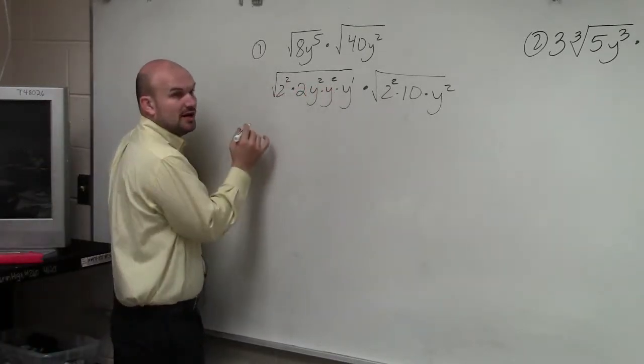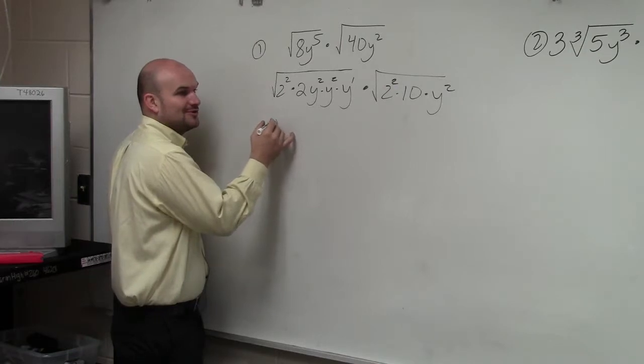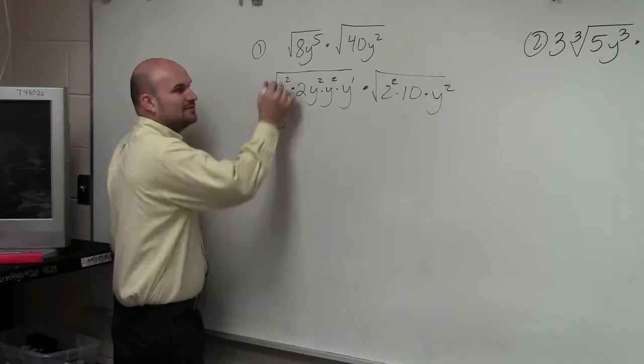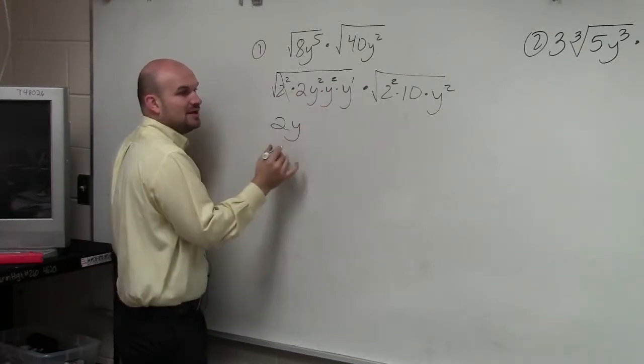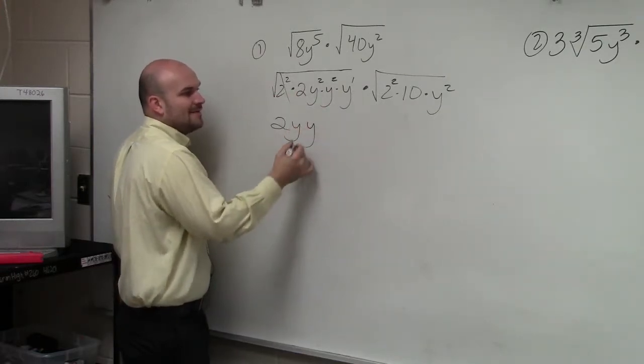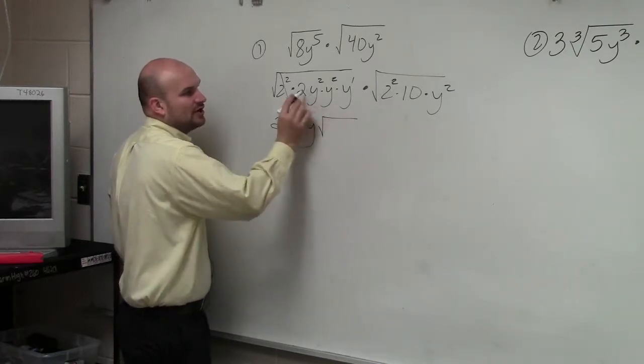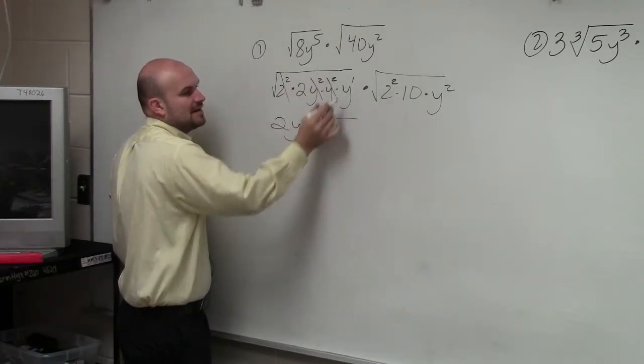So now I'm just going to take the square roots of all my terms that are squared. So the square root of 2 squared is 2. The square root of y squared is y. Square root of y squared is y. Therefore, I have leftover 2 times y.